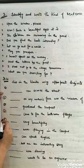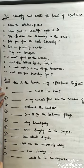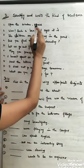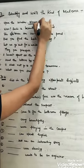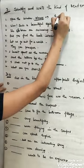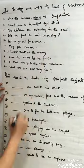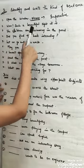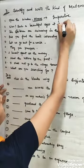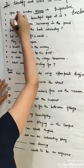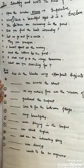Let us see question number third. Identify and write the kinds of sentences. Again, the same kind of question. Open the window. Please. Please shows that it is imperative sentence. Wow, such a beautiful sight it is. It is exclamatory because there is an exclamatory mark.